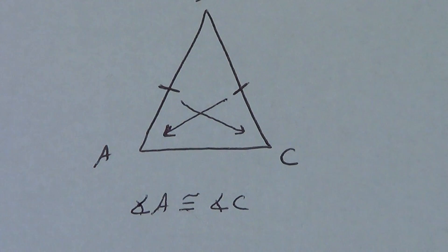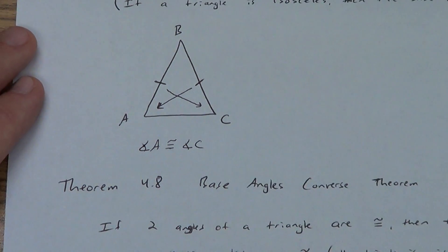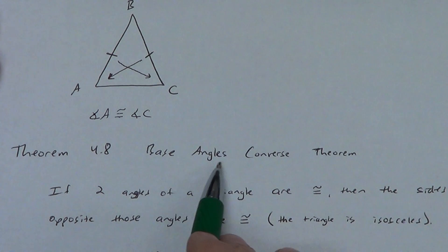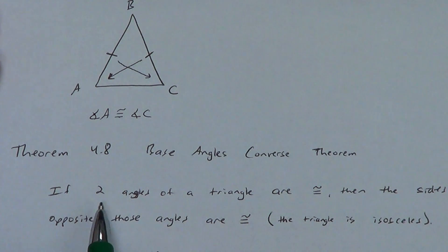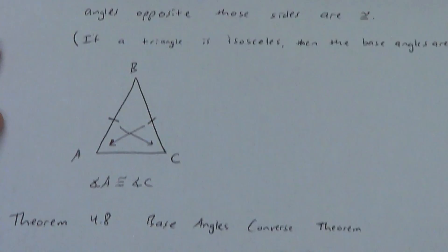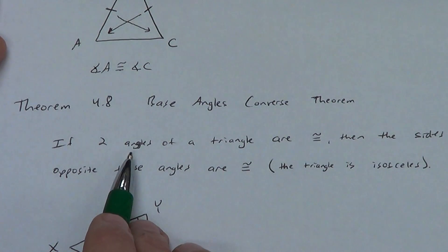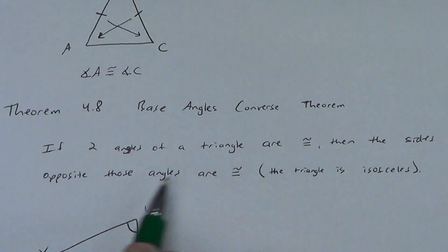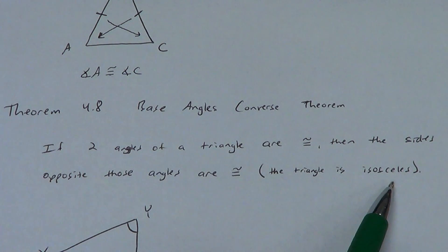This theorem does have a converse. Not every theorem works with a converse, but this is one that does. I'm going to prove these in the second video, so if you aren't sure why they work, just be patient. Theorem 4.8, the Base Angles Converse Theorem — our book calls it the Converse to the Base Angles Theorem. This one says if two angles of a triangle are congruent. Converse means we switch the order: up here we started with sides and ended with angles; here we start with angles and end with sides. If two angles of a triangle are congruent, then the sides opposite those angles are congruent — another way to say it, the triangle is isosceles.